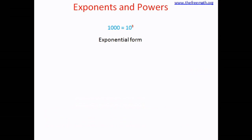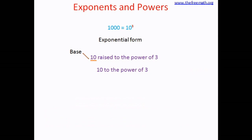So 10 cubed is an exponential form. One way to read this is to say 10 cubed, and the other way is to say 10 raised to the power of 3, or 10 to the power of 3. In this case, 10 is called the base, and 3 is called the exponent. Sometimes 3 can also be called a power or index — you can say exponent, power, or index. So 3 is the exponent here.